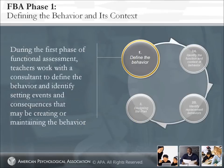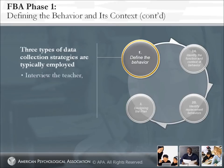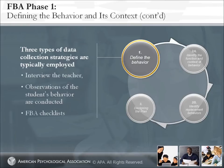FBA Phase 1: Defining the Behavior and its Context. In the first phase of functional assessment, teachers work with a consultant to define the behavior and identify setting events and consequences that may be creating or maintaining the behavior. Three types of measurement strategies are typically employed. First, the school psychologist or consultant will interview the teacher to gain a better sense of the behavior and its context. Second, observations of the student's behavior are conducted, often by the psychologist or consultant, but teachers may also wish to write down their own observations — there are a variety of behavior sampling techniques. Third, FBA checklists such as the Motivation Assessment Scale may help provide a fuller picture of the behavior without a great investment of time and effort.